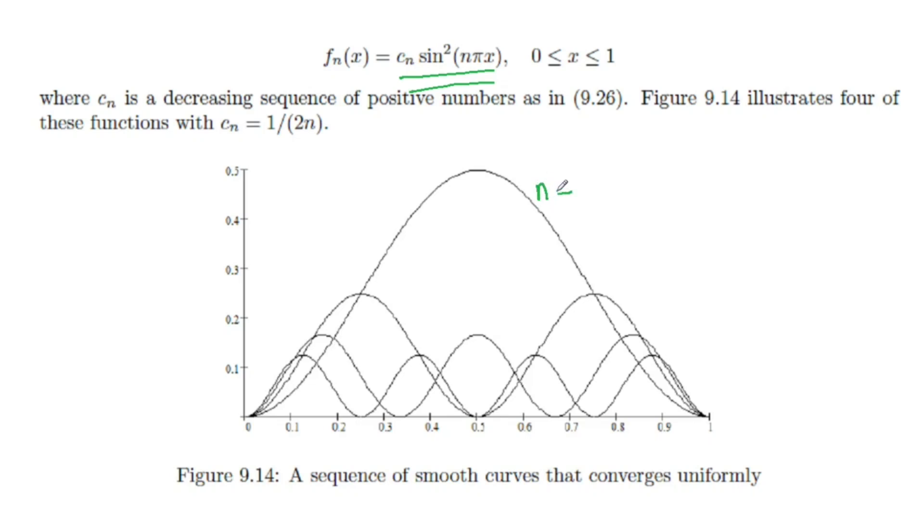Here's n equal to one. If we just put n equal to one, we get this big curve. n equal to two gives us this two-bump curve. n equal to three is down here, which has three bumps, and so on. You'll notice a resemblance to the staircase curves that we talked about a minute ago.